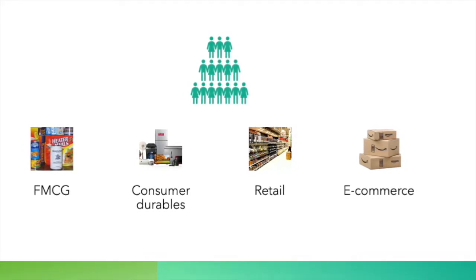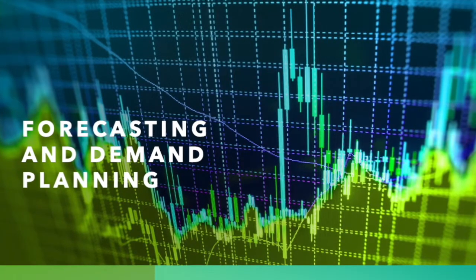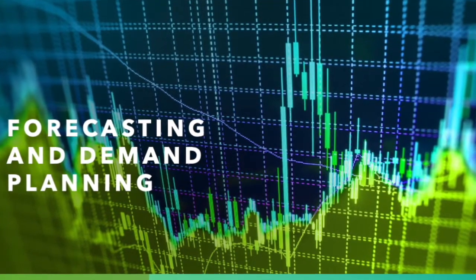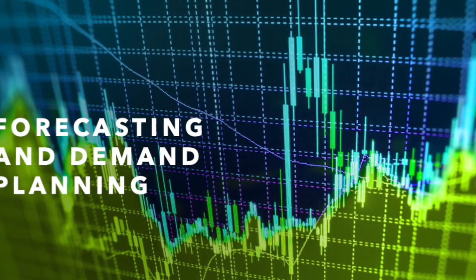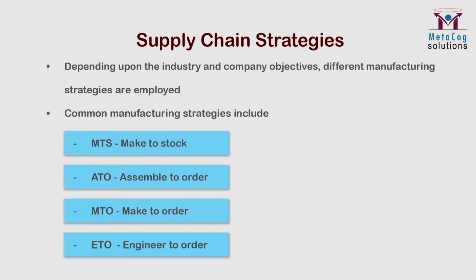Demand planning is relevant for almost every industry that produces something. Our course consists of three sections, and here are some short clips from each of them. Let us briefly look at the common manufacturing strategies. Make to Stock (MTS): when the product is well defined and has a fairly well-established selling pattern, it becomes easier to predict the future and stock accordingly.